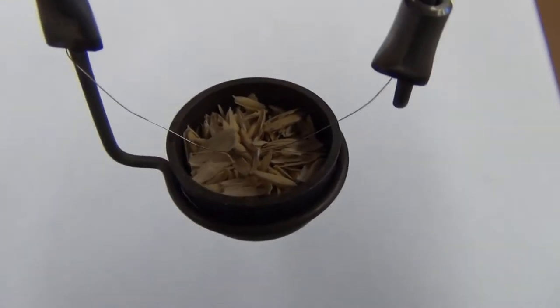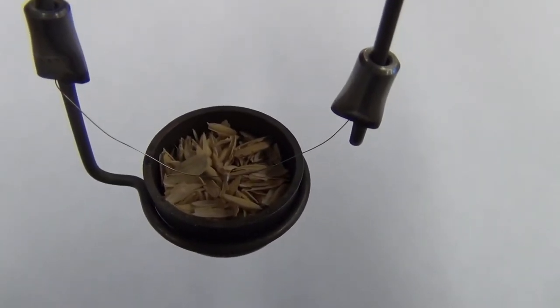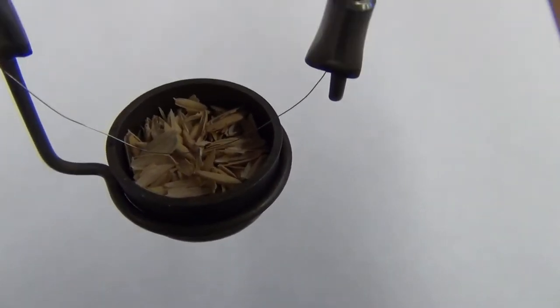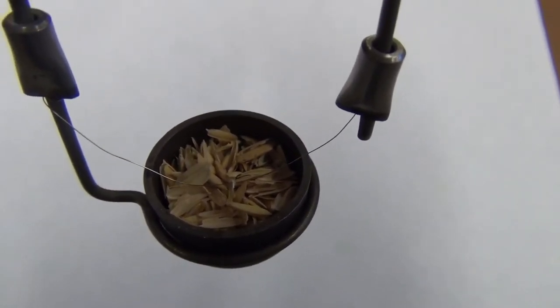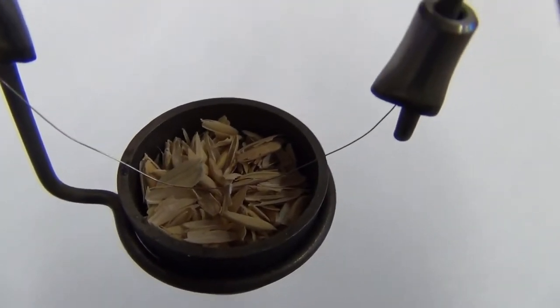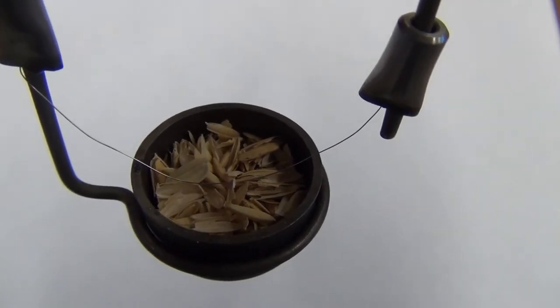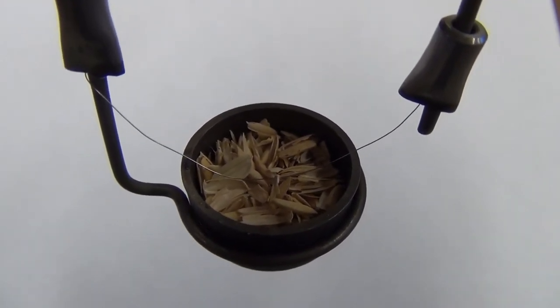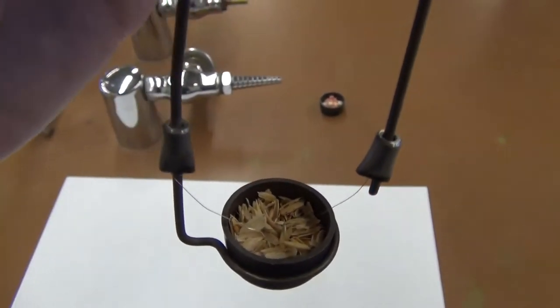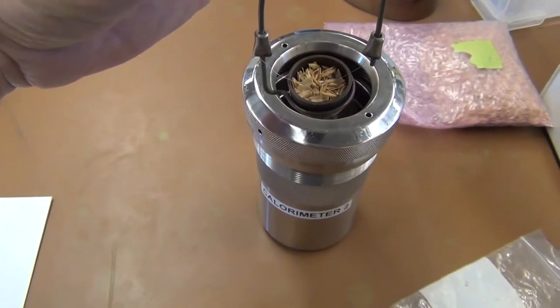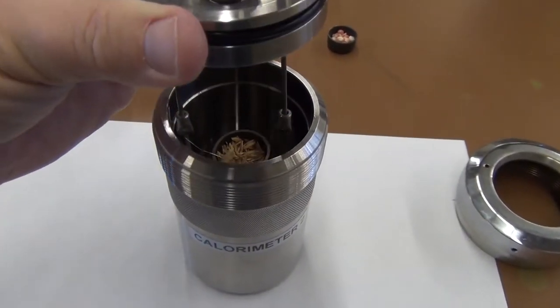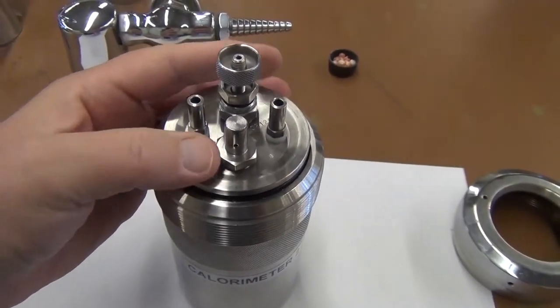In past experiments we've done pop-tarts, peanuts, actual fuel, even foam rubber. Pretty much anything can be burned in here, but ultimately we try to do something that's consistent, has a good higher heat value and can be reproduced. You'll notice that the nichrome wire is touching the fuel. This is so that when we put the thing all together we guarantee combustion. We place the sample in the bomb, careful not to spill anything, and push down.